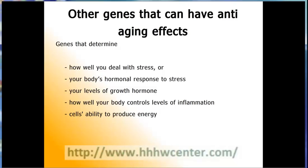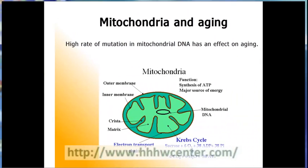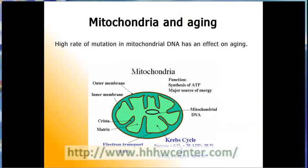Other genes that have been suggested as players in aging include those associated with how well you deal with stress and your body's hormonal response to stress, your levels of growth hormone, how well your body controls levels of inflammation — which is known to contribute to heart disease and diabetes — and your cells' ability to produce energy. Mitochondria are tiny biochemical power plants in cells that convert food into energy. They contain strands of their own DNA, separate from the cell nucleus where the body's genes reside. Scientists say that experiments clearly show that a high rate of mutation in mitochondrial DNA has an effect on aging.